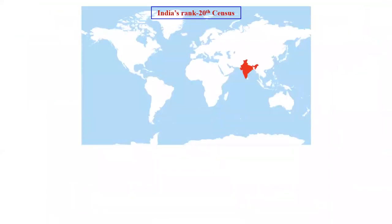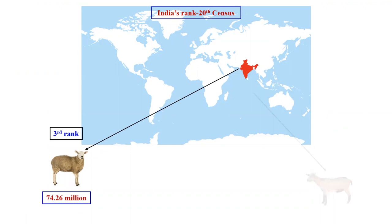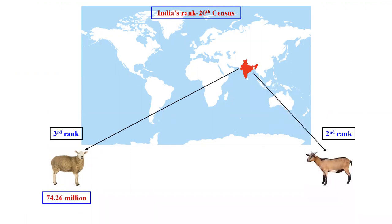According to the 20th census, India ranks third in sheep and second in goat population, contributing approximately 74.26 million sheep and 148.88 million goats. As we know, small ruminants like sheep and goat farming is a neglected sector, and they are highly susceptible to various infectious diseases like bacterial, viral, fungal diseases, and parasitic infections.